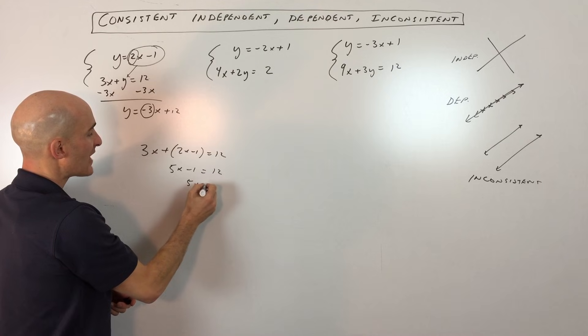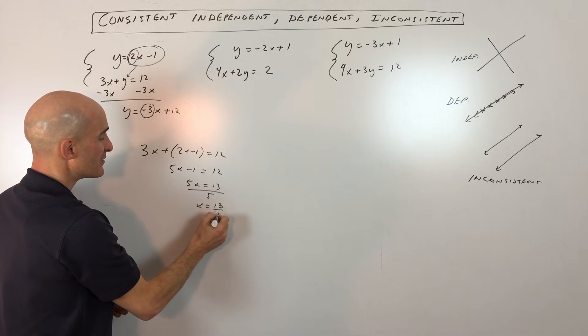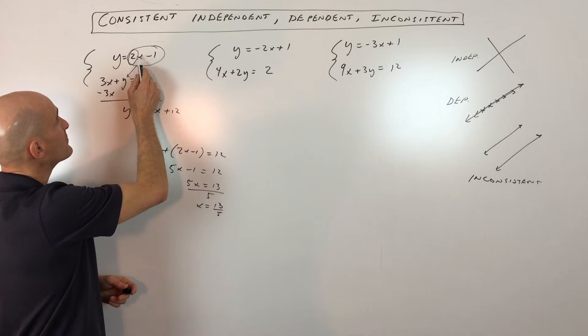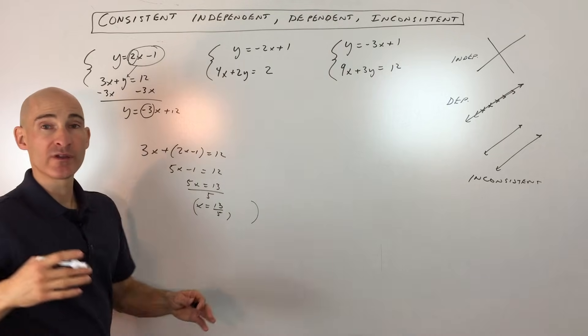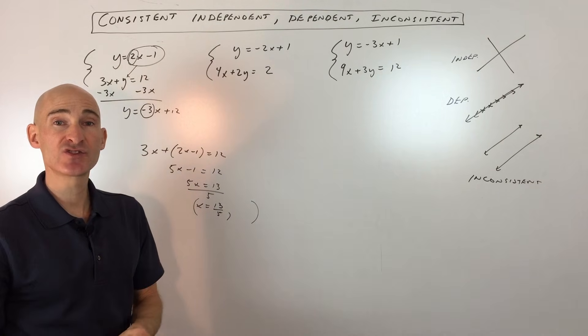And if we divide by 5, you can see that x equals 13 fifths. If we put 13 fifths back in for x, we're going to get the y-coordinate of the point where the two lines cross. And so we can see there's just going to be one solution.